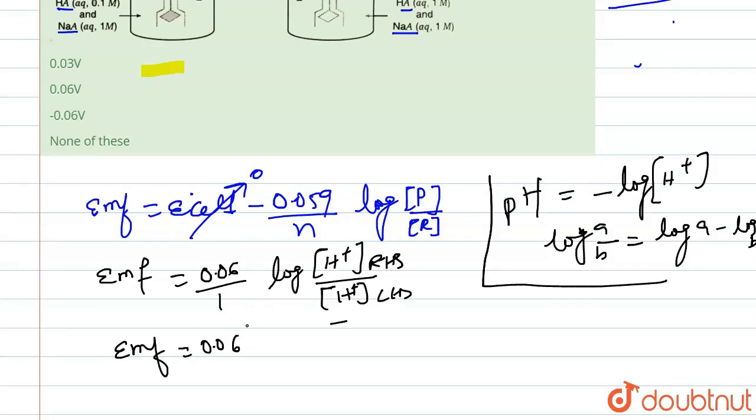And once we use this, we can write this equation as EMF equals to 0.06 times pH of LHS minus pH of RHS. Because there is minus, because of this minus our conversion got opposite. So from here we can find the value of pH LHS.